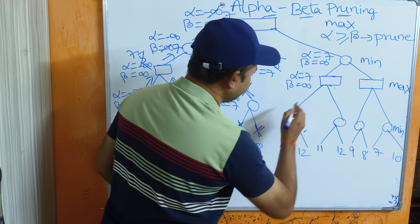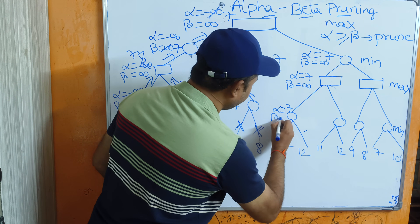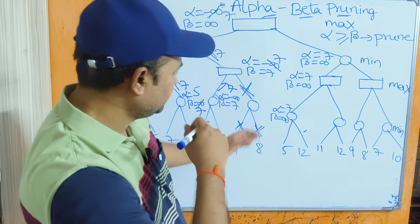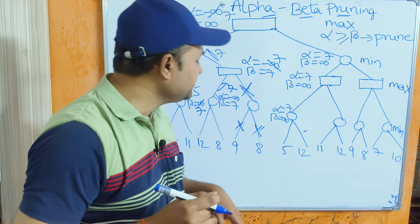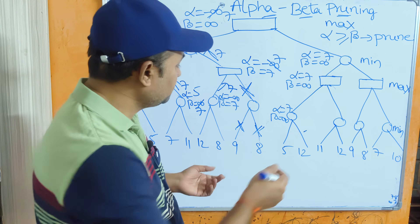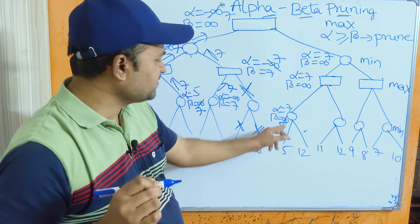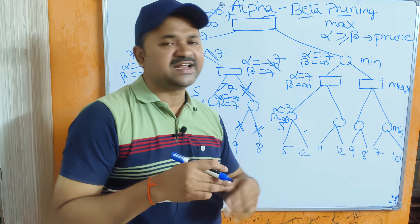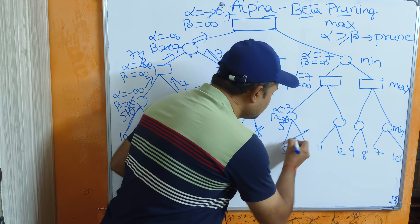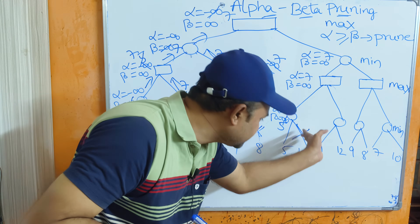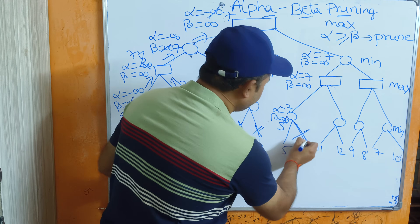Pass alpha = 7 and beta = infinity to the children. This node is used by the min player. Out of infinity and 5, the smallest is 5, so replace beta with 5. Checking the condition: alpha = 7 and beta = 5 — 7 >= 5 is true, so we prune this path. There is no need to traverse that node.